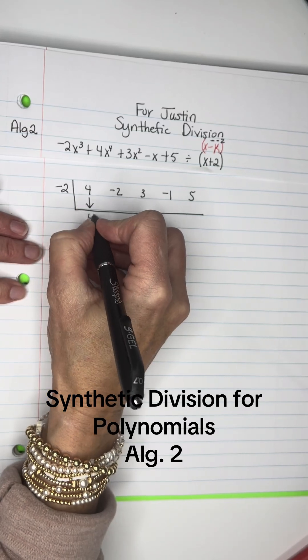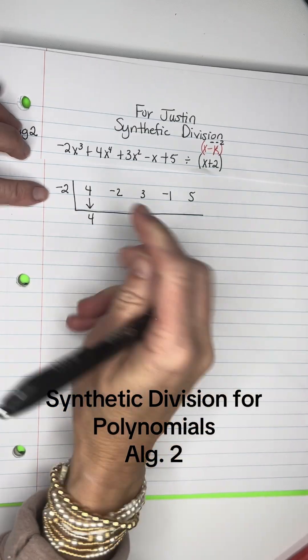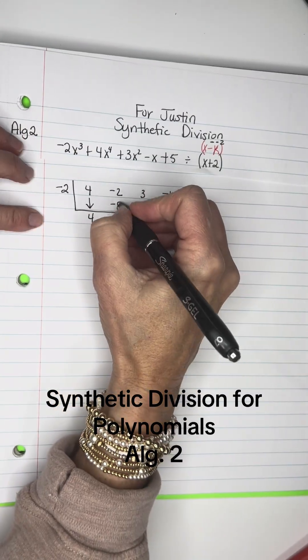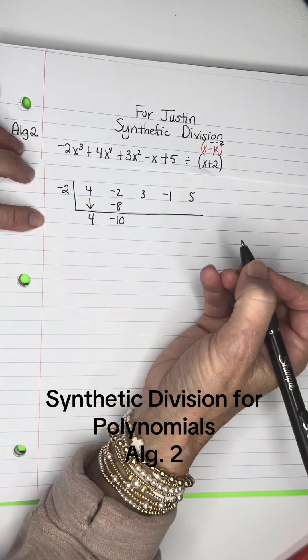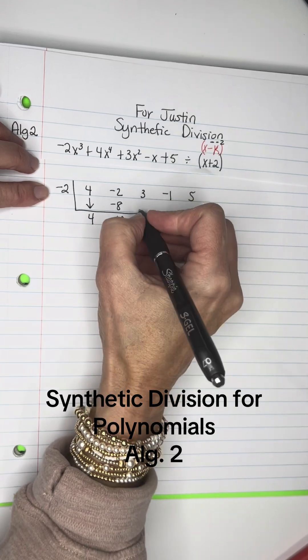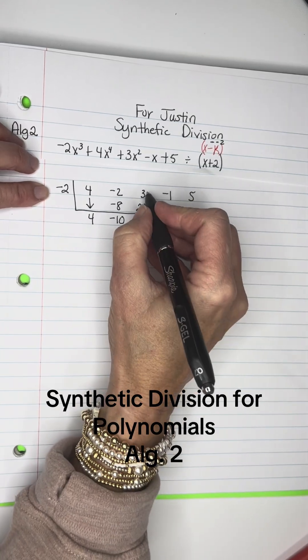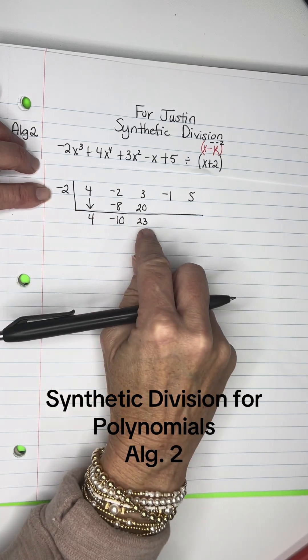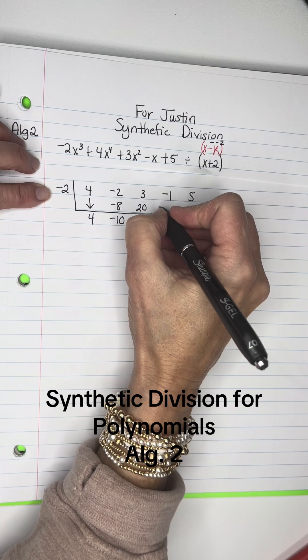You'll bring down your 4, and then you'll start multiplying. Negative 2 times 4 is negative 8. And then you'll add or subtract, and put it here, negative 10. Negative 2 times negative 10 is positive 20. 3 plus 20 is 23.